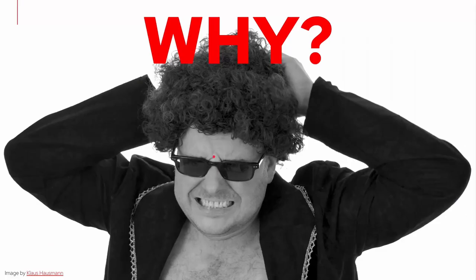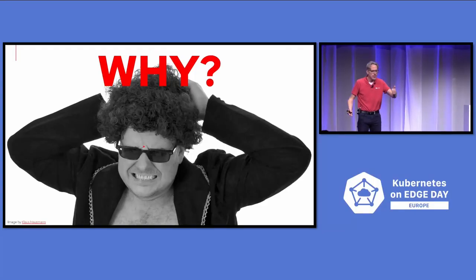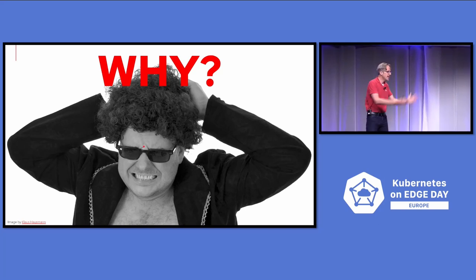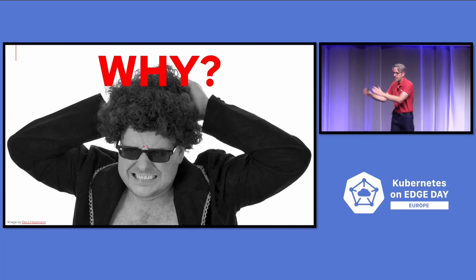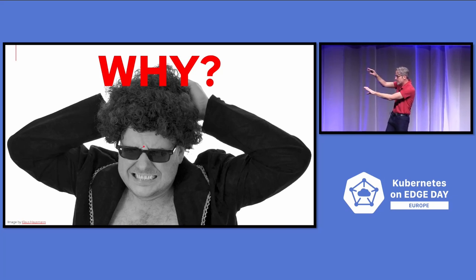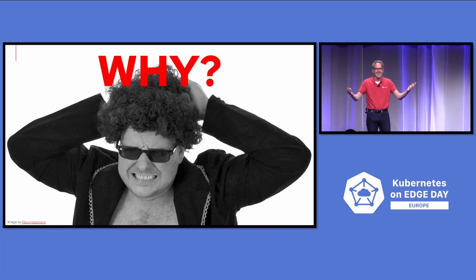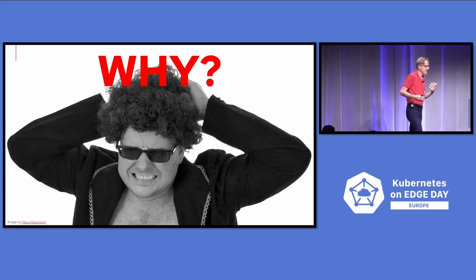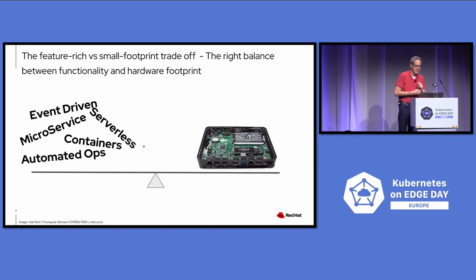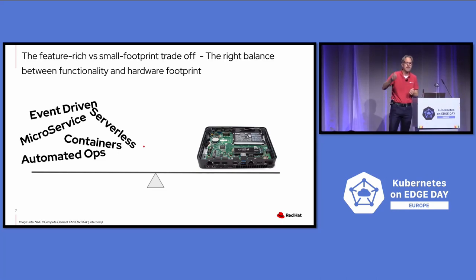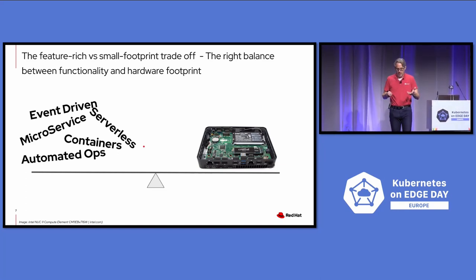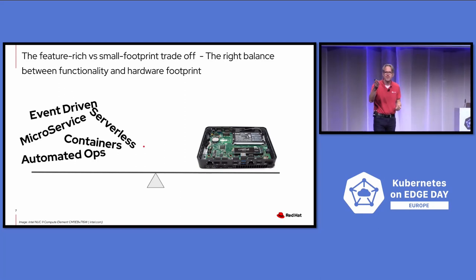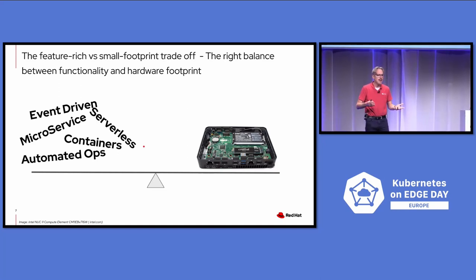Before jumping into the details, let's talk about the elephant in the room: why on earth would you want Kubernetes on a two-core system with a single node, single point of failure? The heart of Kubernetes is scheduling workloads across many nodes — but on a single node, there's no question where to schedule it. The answer is that users want cloud principles, modern microservices, event-driven architectures, and DevSecOps principles applied to edge computing too.